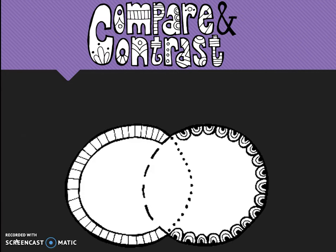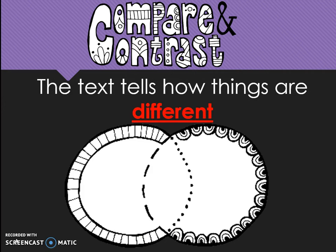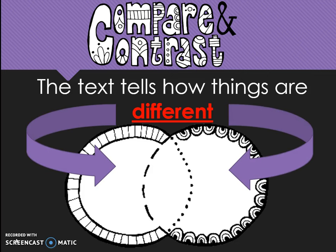The second text structure is compare and contrast. We use this Venn diagram as a visual reminder. When we read a text that uses compare and contrast, the text tells how things are different, which is represented by the outsides of the Venn diagram, and uses signal words like different, apart, however, and whereas.